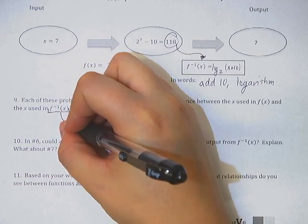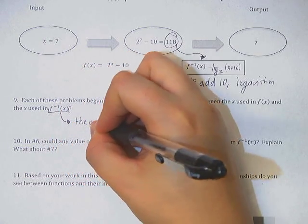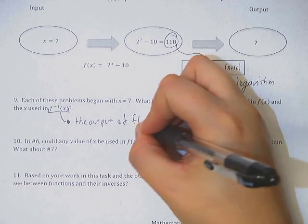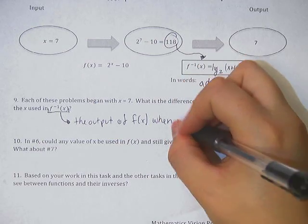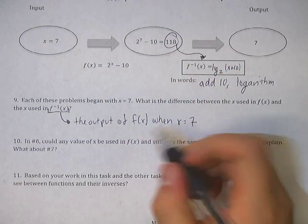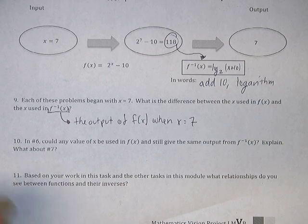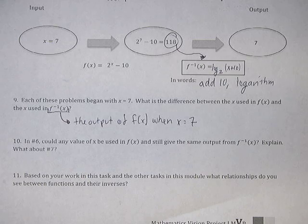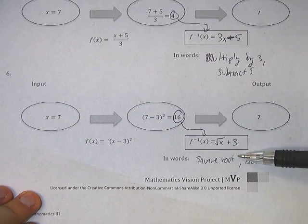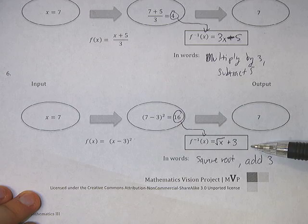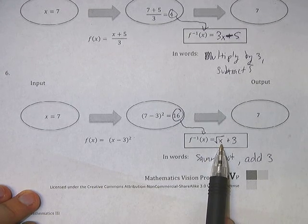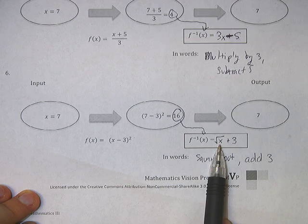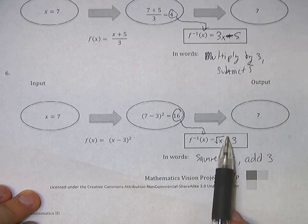Okay. Here are kind of our definition things. Each of these problems began with x equals 7. What is the difference between the x used in f of x and the x used in inverse f of x? The difference is the x that's used here. This is the output of f of x when x equals 7. And when we plug in that output, we should get 7 back. That's part of our inverse functions. All right. So it's asking, in number 6, could any value of x be used for f of x and still gave the same output? What about number 7?